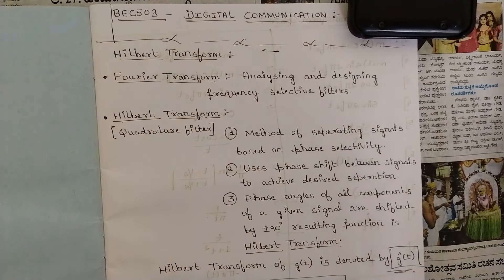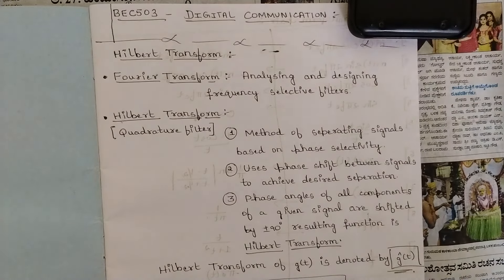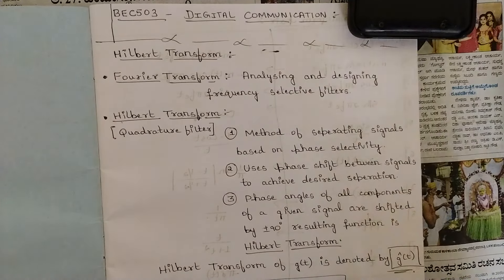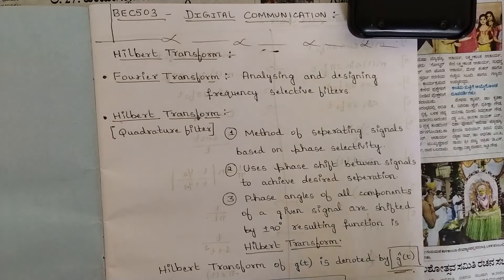Here in Digital Communication, we are studying with respect to digital systems — that is, how analog signals behave when converted into digital mode. Digital means zeros and ones, binary forms. In fourth sem we analyzed circuits and block diagrams; in Digital Communication we study in detail how signals are generated, how they react, and how they produce output.